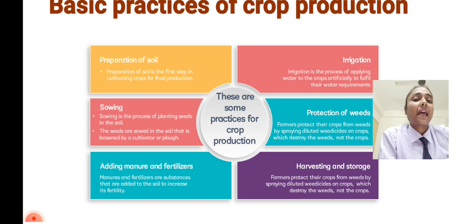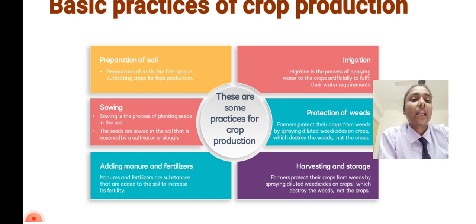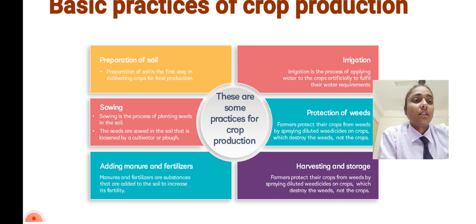The next practice is adding manure and fertilizers. Manure and fertilizers are substances added to the soil to increase its nutrient content and improve the fertility of the soil. The next practice is irrigation. After adding manure and fertilizers, the soil needs water. Irrigation is the process of applying water to crops artificially to fulfill their water requirements.